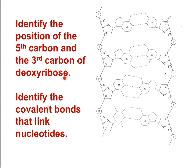Can you identify the position of the fifth and third carbons of deoxyribose? The 5' end of one strand is at the fifth carbon; the 3' end is at the third carbon. On the opposing strand, the 3' end shows the third carbon, and the 5' end shows the fifth carbon. Can you identify the covalent bonds that link nucleotides? There are covalent bonds on both the left and right strands connecting each nucleotide to the next.